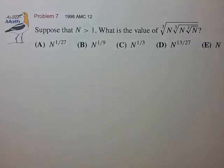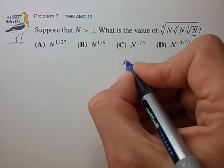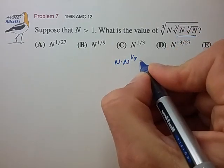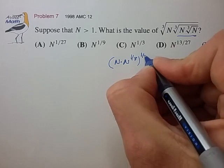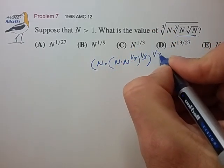So, working from inside to out, we'll start with this inner portion and write this as n to the 1/3 times n, bracket, all to the 1/3, times n, bracket, all to the 1/3.